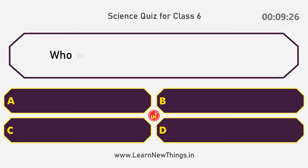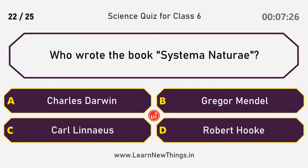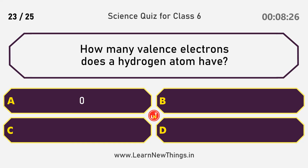Who wrote the book Systema Naturae? Answer: Carl Linnaeus. How many valence electrons does a hydrogen atom have? Answer: One.